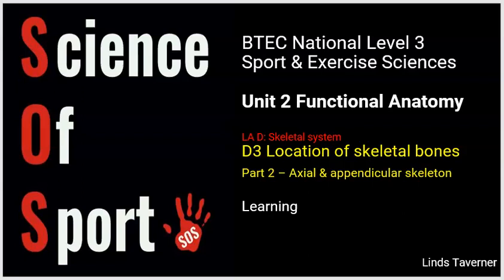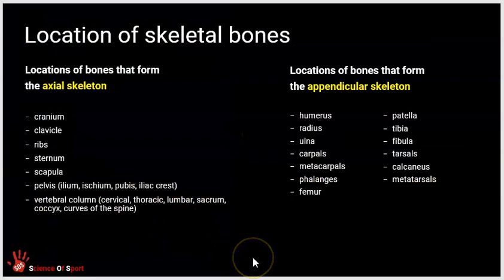This Science of Sport video looks at the BTEC Sport and Exercise Sciences Unit 2 Functional Anatomy specification, learning aim D3, which is part of the skeletal system. In this second video on this criteria, we're looking at the axial and appendicular skeleton. The specification requires you to consider which bones are part of each, and you may need to label diagrams, identify bones in sporting images, or discuss bone type and function.